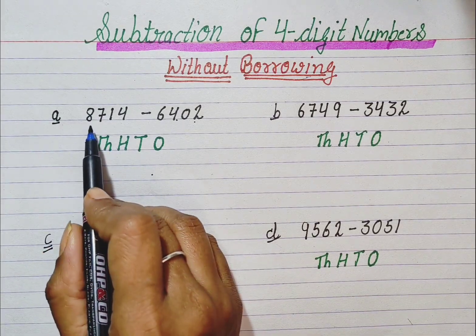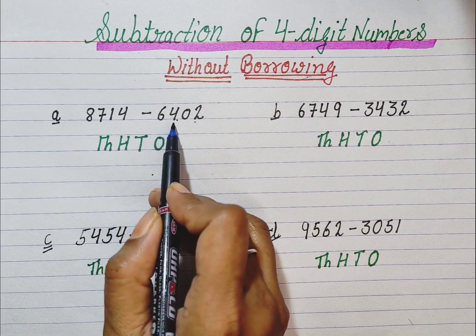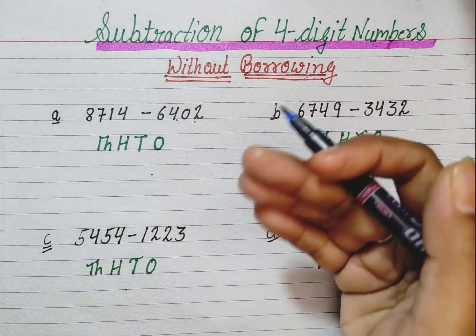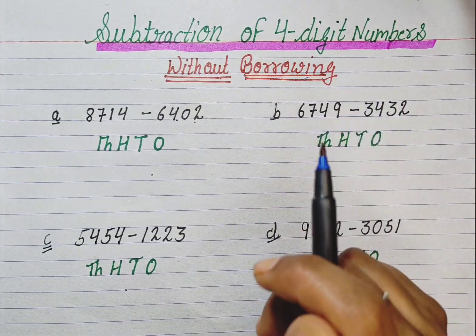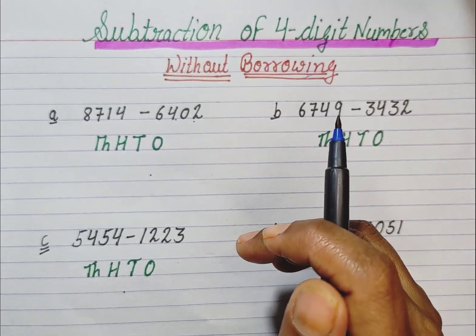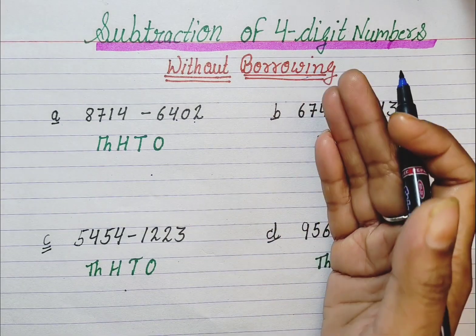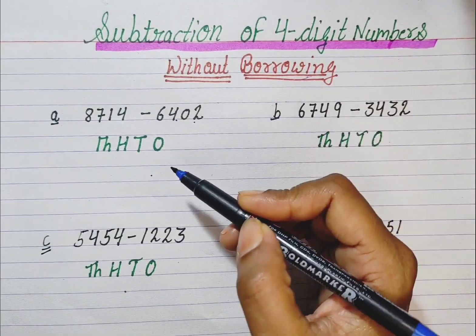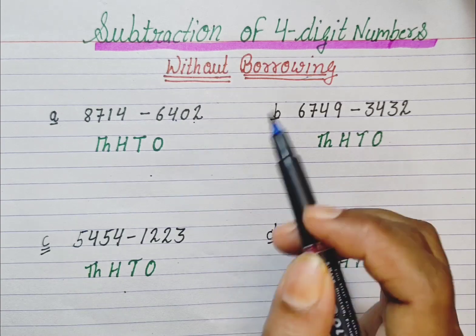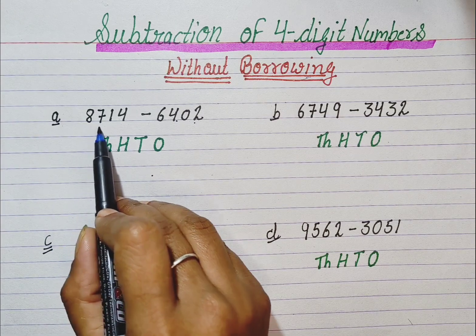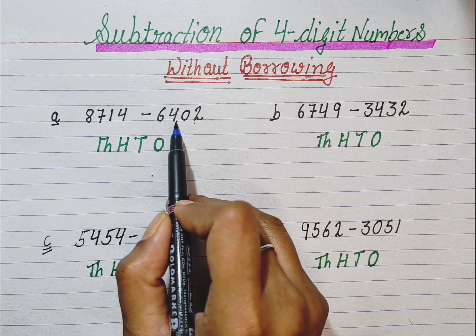First question: 8714 minus 6402. First, we write the numbers one below the other. In subtraction, we always write the bigger number on the top and the smaller number on the bottom. So, it is 8714 minus 6402.